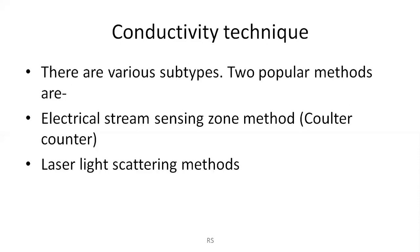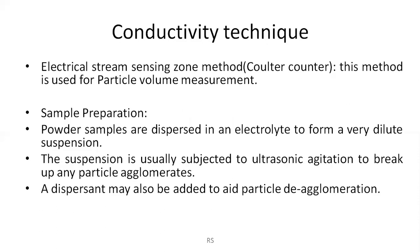Now we move on to the conductivity technique. There are various subtypes; the two most popular methods are the electrical stream sensing zone method, commonly known as the Coulter counter method, and the laser light scattering method. Because the Coulter counter method is the most popular one, we discuss it here.